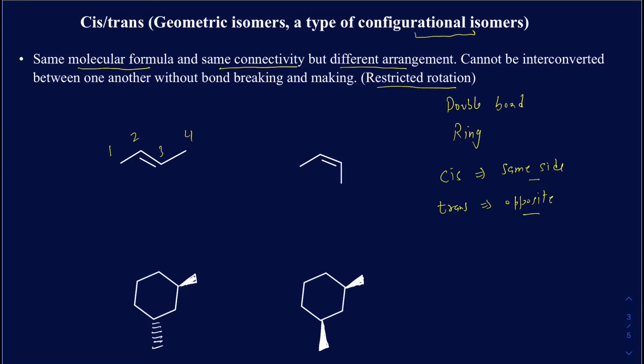Another nomenclature you'll probably be seeing for cis and trans is E and Z. Cis is the same as Z and trans is the same as E. There are times when you strictly use Z and E over cis and trans — that usually applies when you don't have the same type of substituents on those double bond carbons. But a lot of times people use Z and E to mean the same as cis and trans.